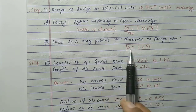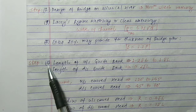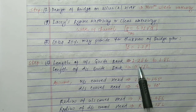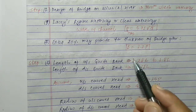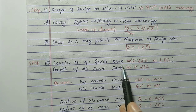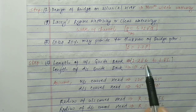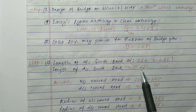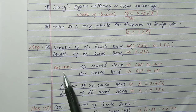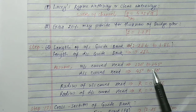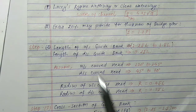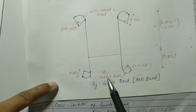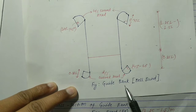In the second step, we determine the length of the upstream guide bank. The formula is: upstream guide bank length = 1.25 L to 1.5 L. The length of the downstream guide bank = 0.25 L. The upstream curve head angle is taken as 120° to 145°. You can see in this figure the upstream curve head and downstream curve head of the typical guide bank or bell bond.